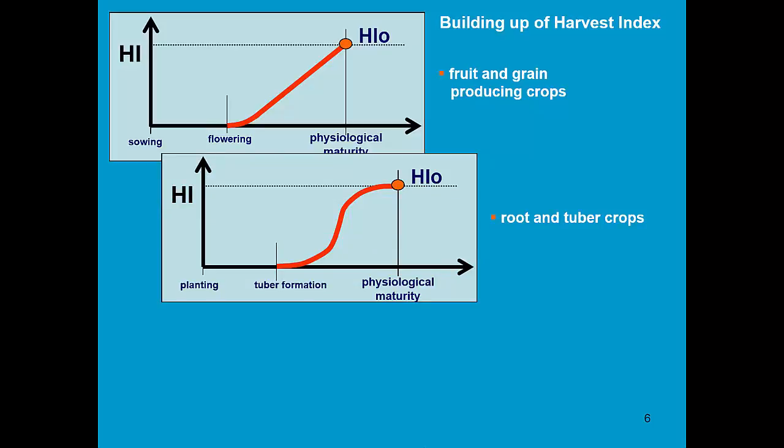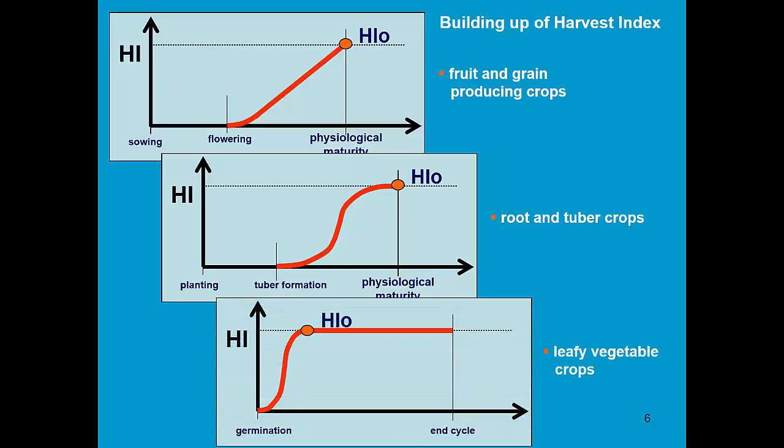For root and tuber crops, it starts from the tuber formation, and the shape is also somewhat different of the increase of the harvest index. For leafy vegetable crops, it starts actually from germination, and very quickly the reference harvest index is reached.